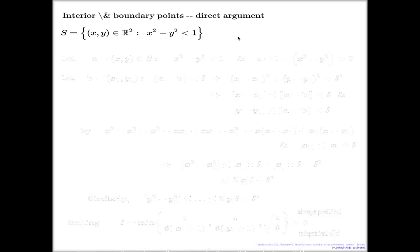We need to find the interior boundary points for this set. There will be a direct argument and also an indirect argument a little bit later. First I'd like to discuss the direct argument. It resembles a lot what we just did for the ball — the main step was choosing delta and applying the triangle inequality, which works here too. I'll fix a point in this set.